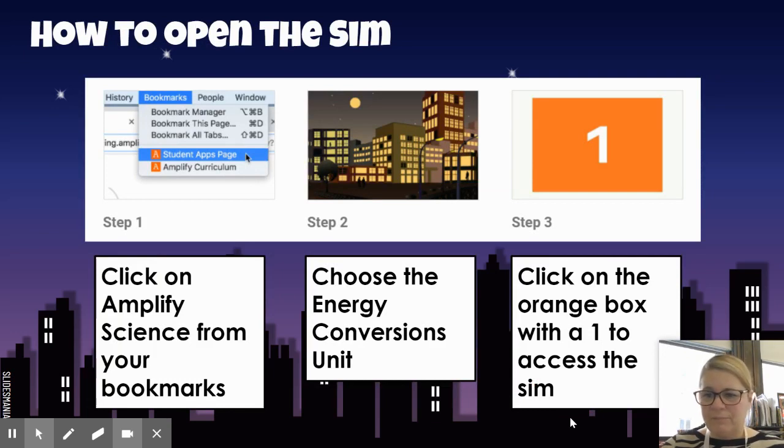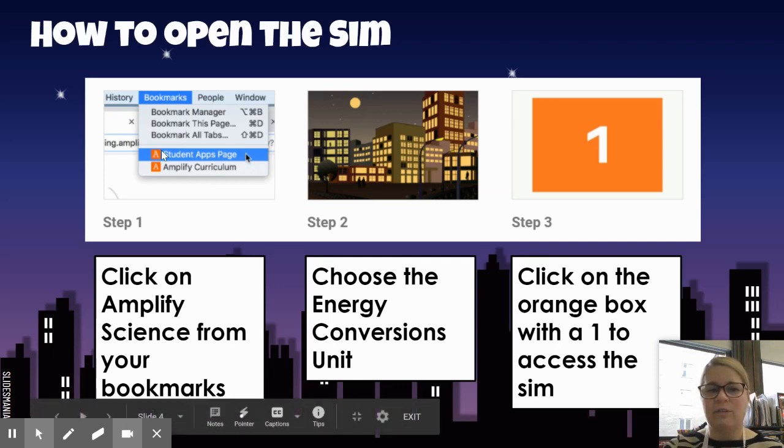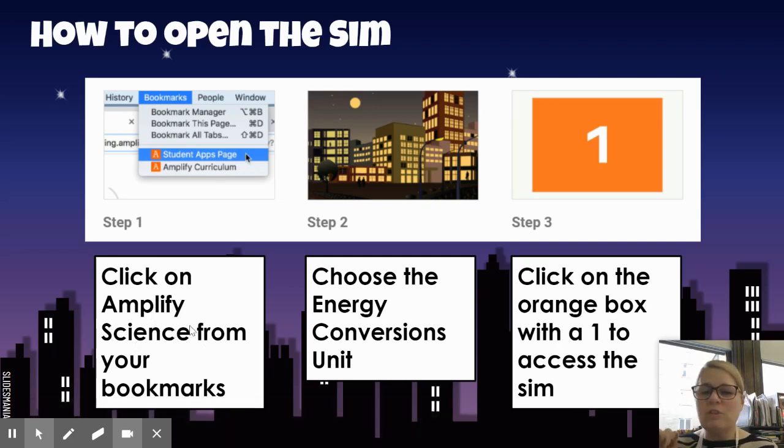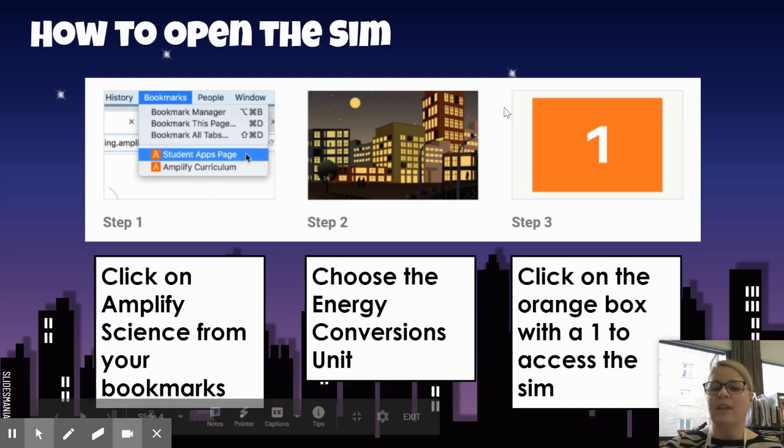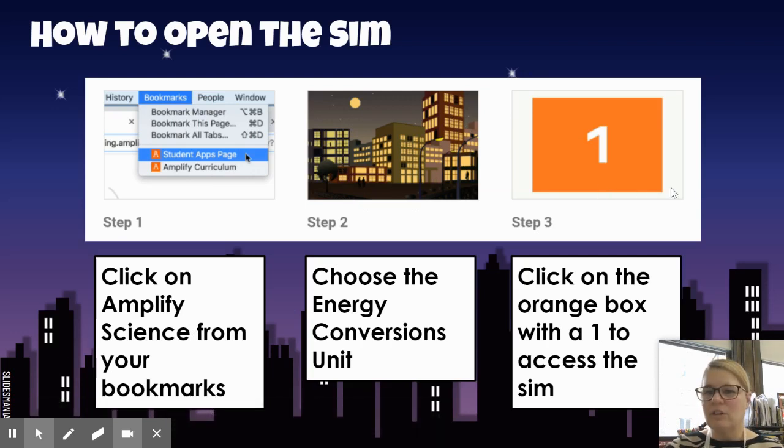Here's how you're going to open your sim. I'll give you specific passwords at the end, but you're going to go to your Sacred Heart bookmarks, just like we go for everything else, and you're going to find Amplify Science. Once you've logged in, you're going to choose the energy conversions, and it looks like this. It will have the picture. That's Ergstown, remember, with the lights on. And then you're going to look for this orange box with the number one in it. That is the sim we're going to be working with.